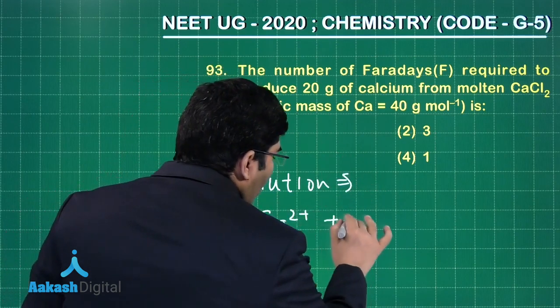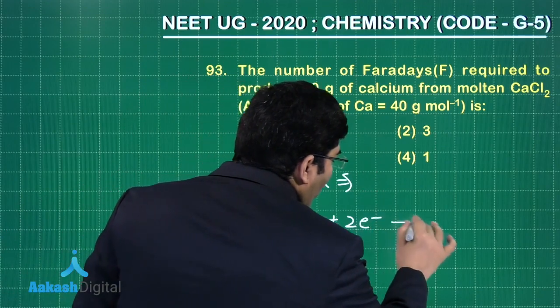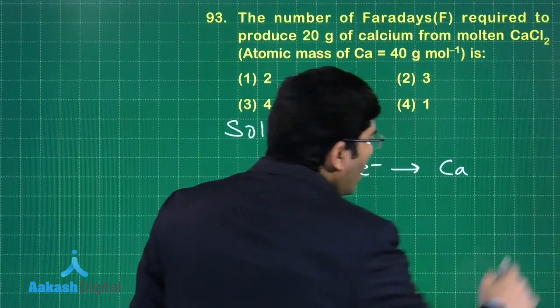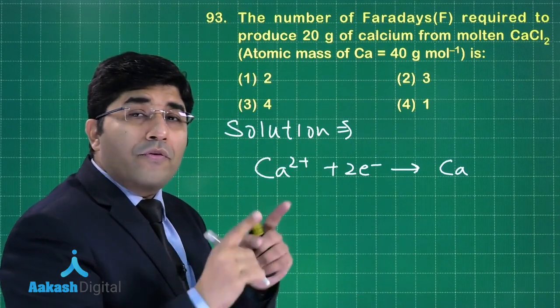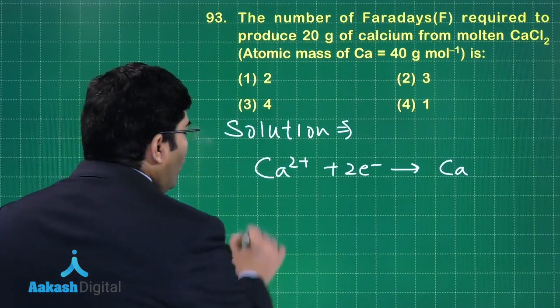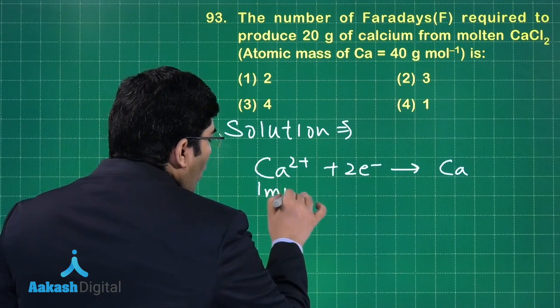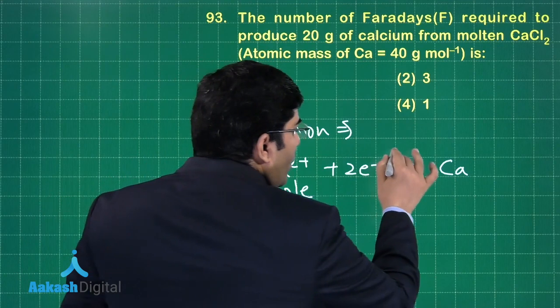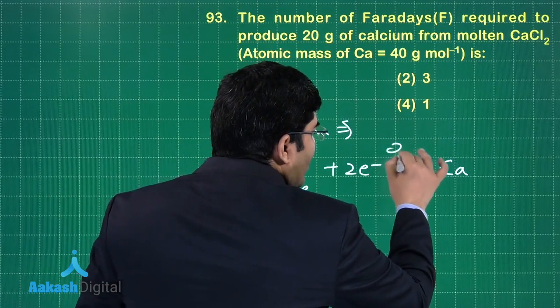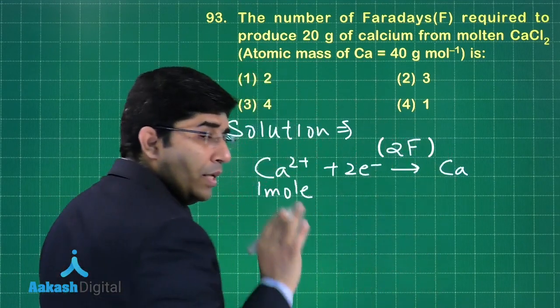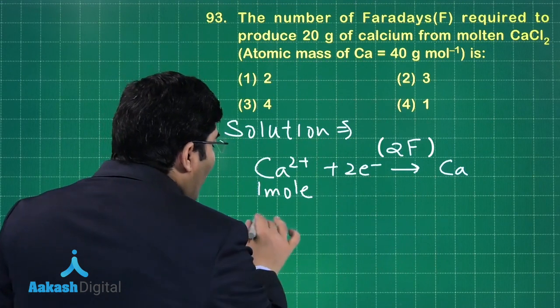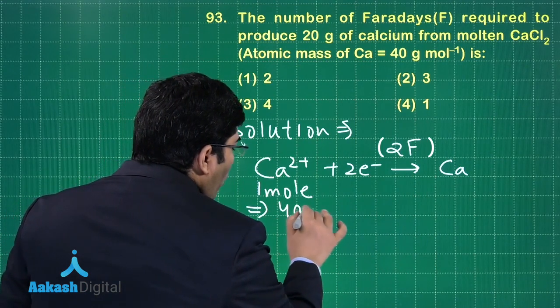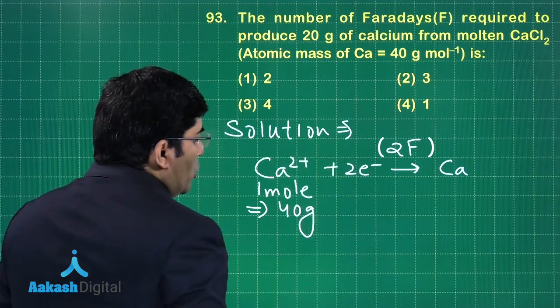This is a straightforward question, belongs to electrochemistry. Let us suppose we have Ca²⁺ and it will reduce to calcium. If we talk about one mole of calcium ions, we need two moles of electrons, and two moles of electrons means two Faradays. One mole of Ca²⁺ means 40 grams, so if we take 40 grams of Ca²⁺, then 40 grams of calcium will form.